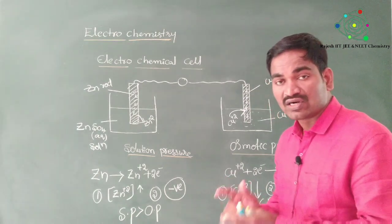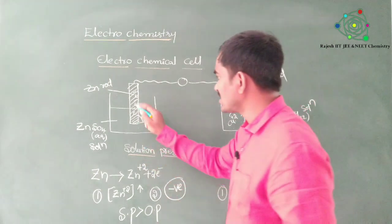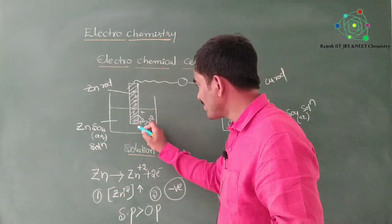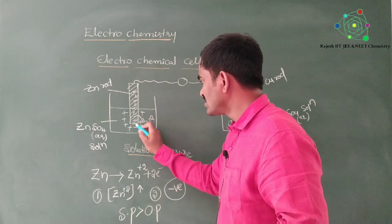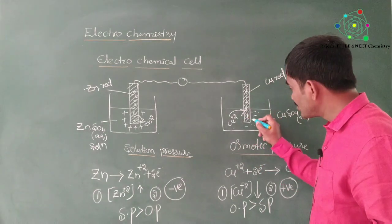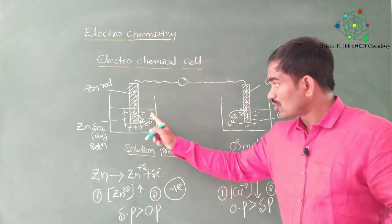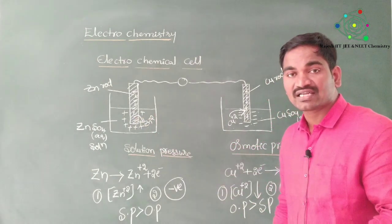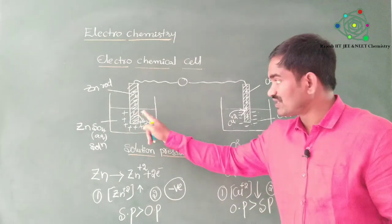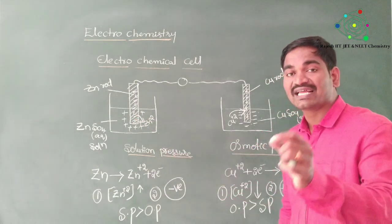One more point to remember: charge separation is taking place. In the solution pressure case, the rod becomes negative and the solution becomes positive. In the osmotic pressure case, the rod becomes positive and the solution becomes negative. The potential difference between the metal rod and the solution is nothing but electrode potential.